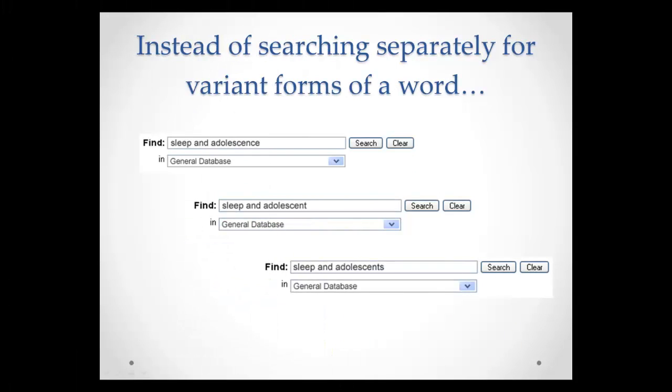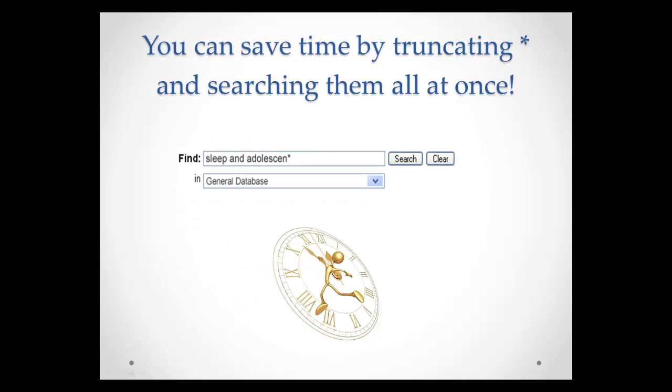Instead of searching separately for variant forms of a word, you can save time by truncating and searching them all at once.